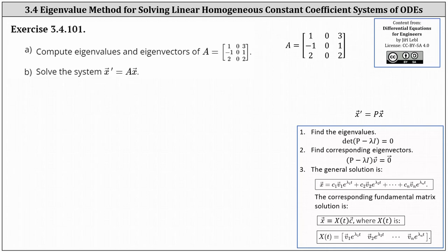We're asked to compute the eigenvalues and eigenvectors of matrix A and then solve the system given by the equation x prime equals A times x. To determine the eigenvalues of the matrix, we need to set up the equation: the determinant of the difference of matrix A and lambda I equals zero, and solve for lambda.